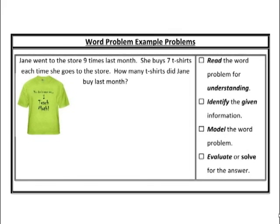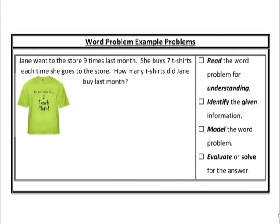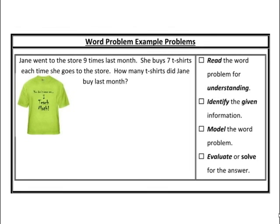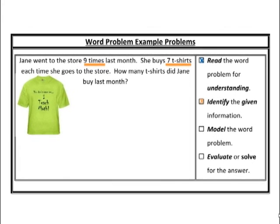Let's try this. Read the problem for understanding: Jane went to the store nine times last month. She buys seven t-shirts each time she goes. How many t-shirts did Jane buy last month? Don't think about the numbers yet — Jane goes to the store a certain number of times, and each time she buys a set of t-shirts. 'Sets of' or 'groups of' — that sounds like multiplication. I can predict my final answer will be bigger than my given information.